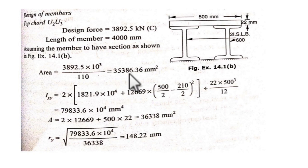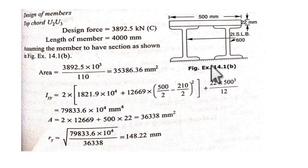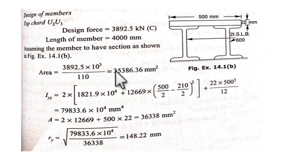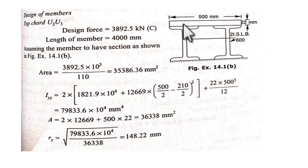This yields a required area of 35,386.36 mm². Since it's a truss, a single I-section would not be sufficient. The choice of section is up to the designer, but it must meet the area requirements. Here we have selected two I-sections along with one cover plate. You can also try two I-sections alone, check the load carrying capacity, and if it fails, add one cover plate, then another if needed.